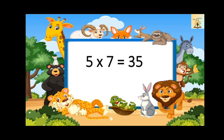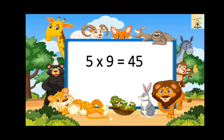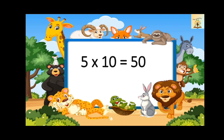Five sevens are thirty-five. Five eights are forty. Five nines are forty-five. Five tens are fifty.